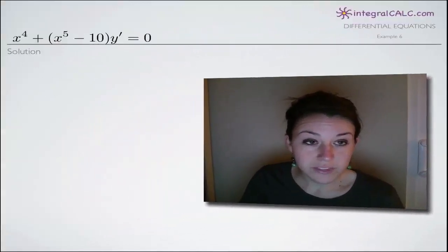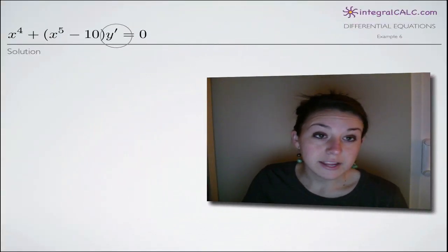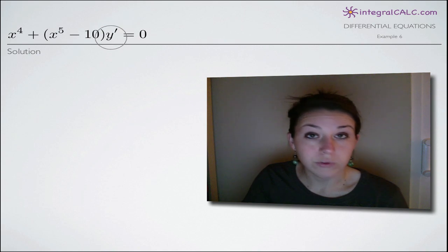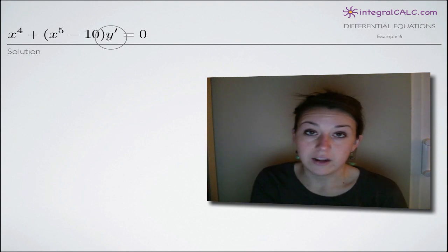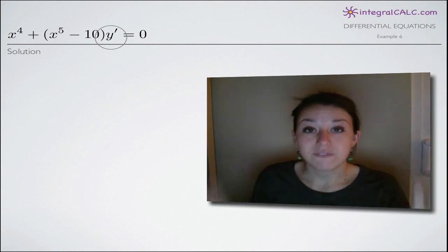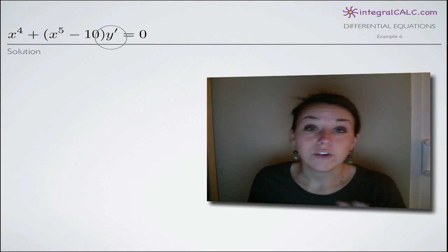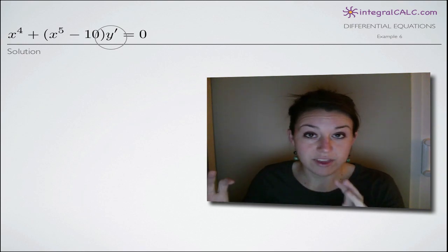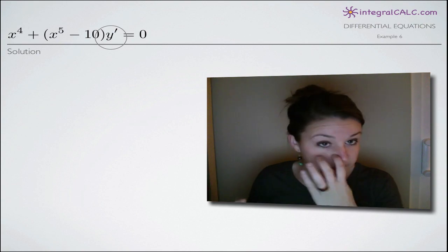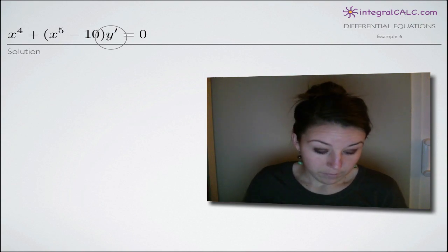The first thing we're going to need to do with this problem is isolate y prime on its own side. We're going to move all of the x's over to the right side and the y's over to the left side. Once we have the variables separated, we'll integrate both sides, add c, the constant of integration, to the side with the x's, and that process should give us our final answer.